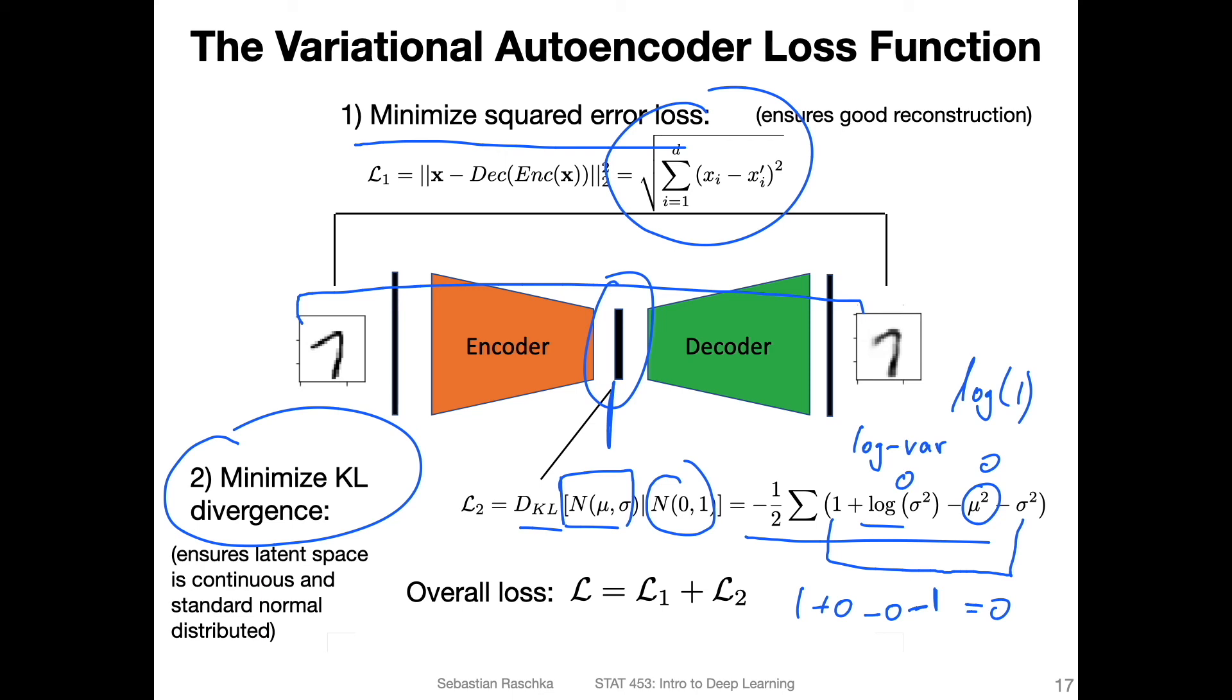So what we want here is this mean vector to be close to zero and the variance to be close to one, which happens if this log var term is close to zero. So that's essentially what the KL divergence term forces this vector to be.